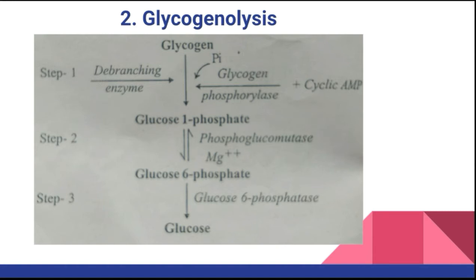The next process is glycogenolysis. The process of breakdown of glycogen is called glycogenolysis. 'Glyco' means glycogen and 'lysis' means to break down. Glycogen is completely broken down into glucose. This process occurs when the blood sugar level falls.